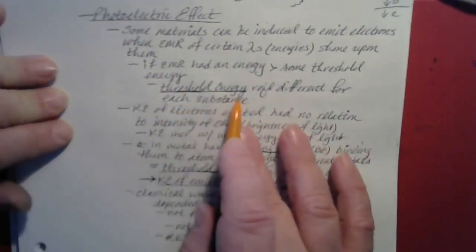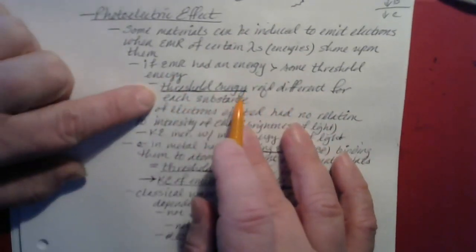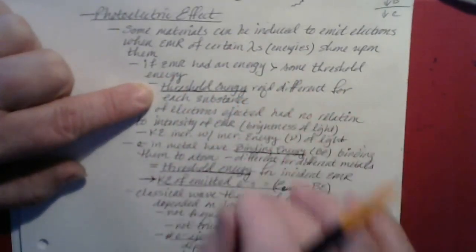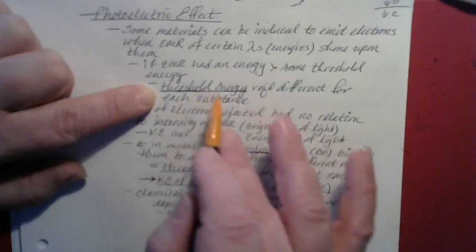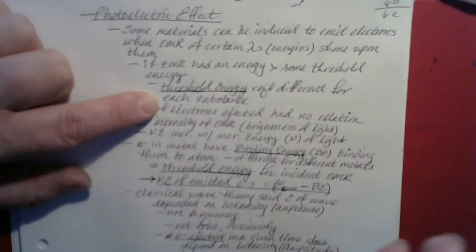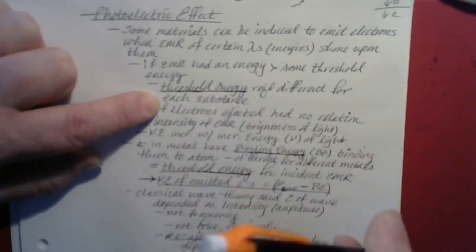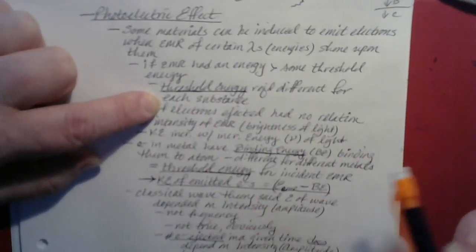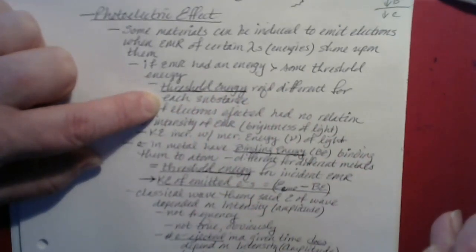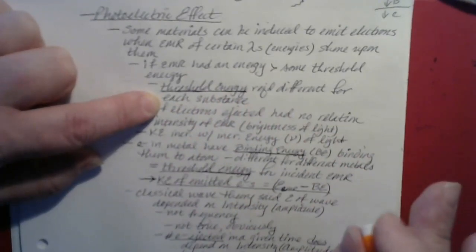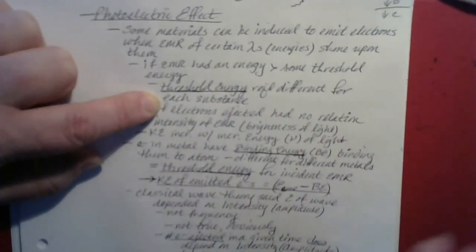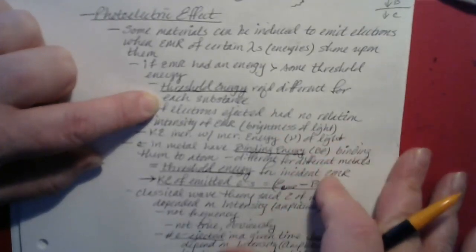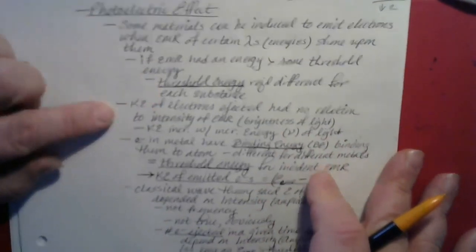The threshold energy — the minimum energy required for electromagnetic radiation to produce electrons from a substance — actually changes from one substance to another. Each substance has its own characteristic value. For things like cesium and francium metals, the threshold energies are very low — they'll essentially throw electrons at you just for looking at them. On the other hand, something like iron has a pretty high threshold value; you'd probably have to shine X-rays or even gamma rays on iron to get it to release electrons. So it can vary quite a bit.